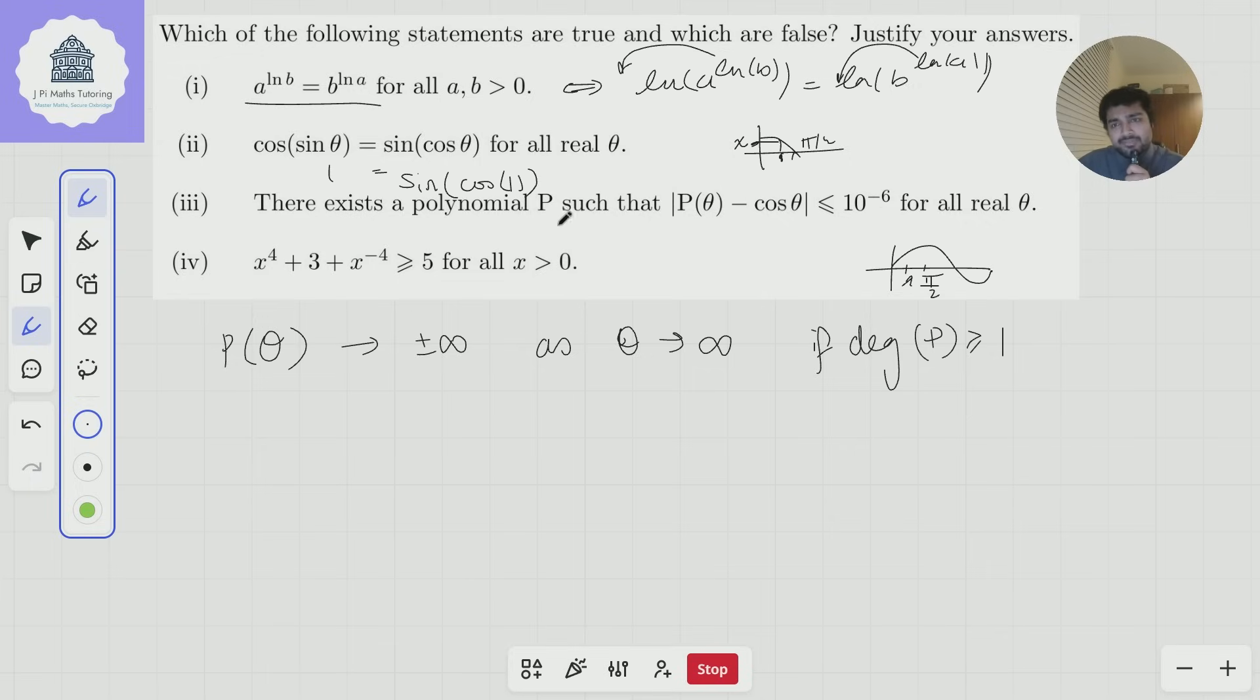Okay, so the only result then is if for this, for there to be any hope of there existing such a polynomial, is if P(θ) is a constant k, but then it's pretty clear, right? If I draw a cos graph, if I take any horizontal line here,